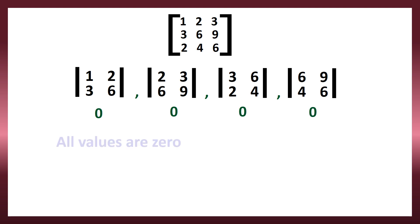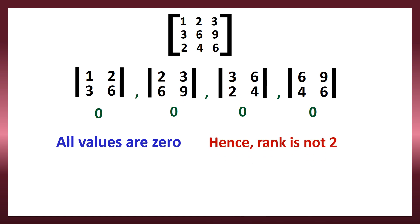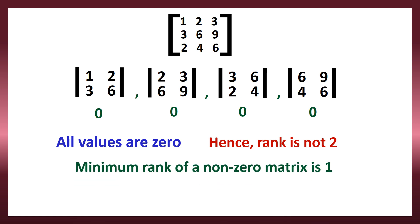When all the determinant values are 0, the rank is not 2. We checked rank 3 — determinant was 0, so rank is not 3. We then checked all four 2x2 sub-matrices — all determinants were 0, so rank is not 2. The minimum rank of a non-zero matrix is 1; there is no need to calculate further. It is confirmed that the rank is 1.